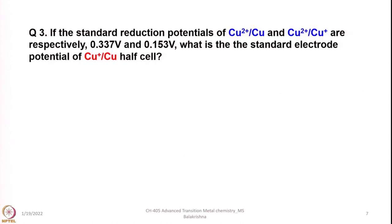Let us look into one more question. If the standard reduction potentials of Cu²⁺/Cu and Cu²⁺/Cu⁺ are given as 0.337 V and 0.153 V respectively, what is the standard electrode potential of the Cu⁺/Cu half cell? The value for Cu²⁺/Cu is 0.337 V, and for Cu²⁺/Cu⁺ it is 0.153 V. Now let us calculate ΔG for this couple.